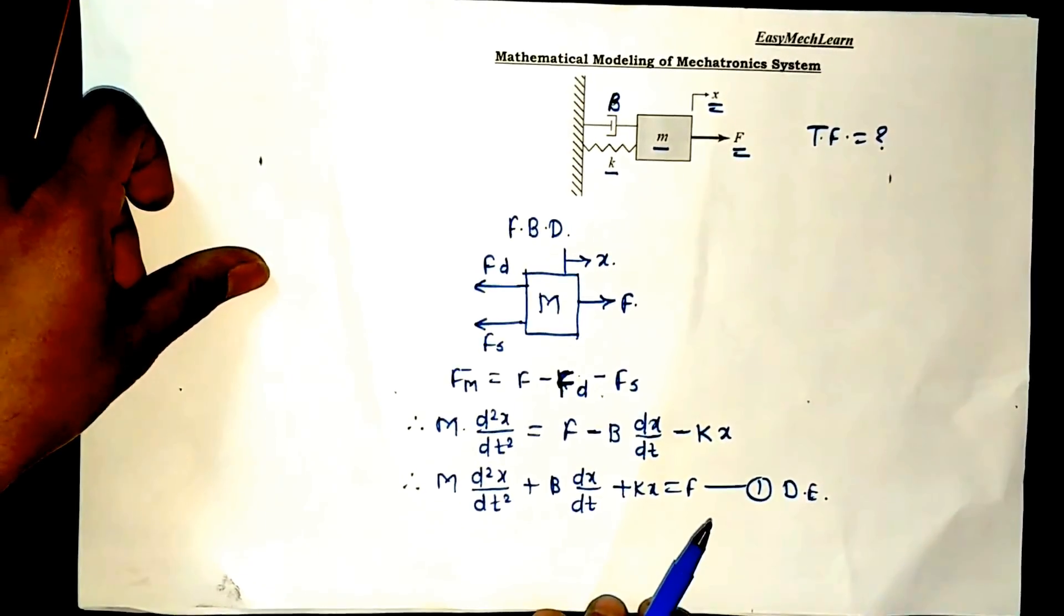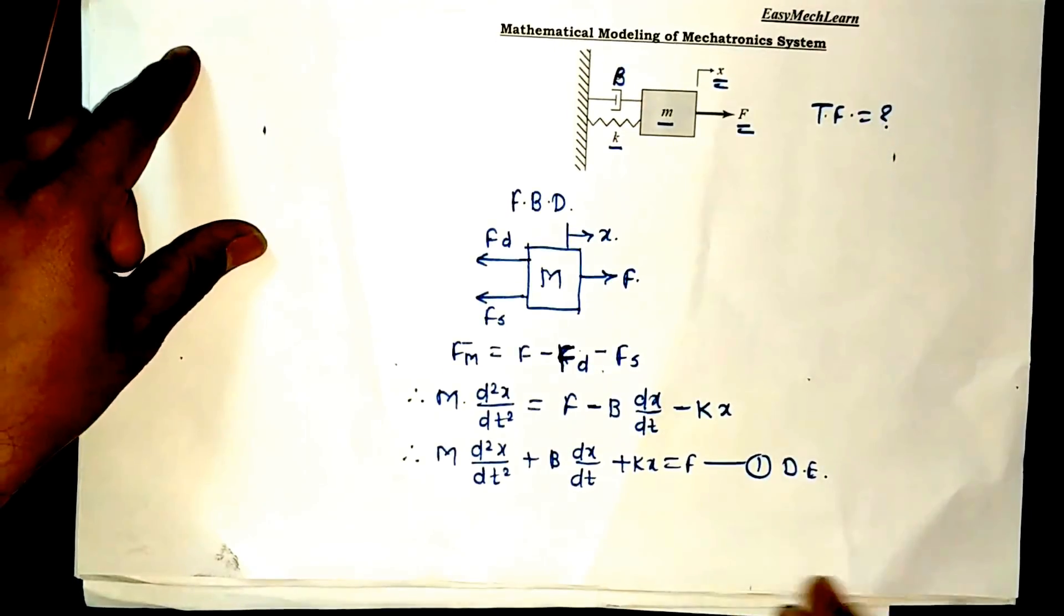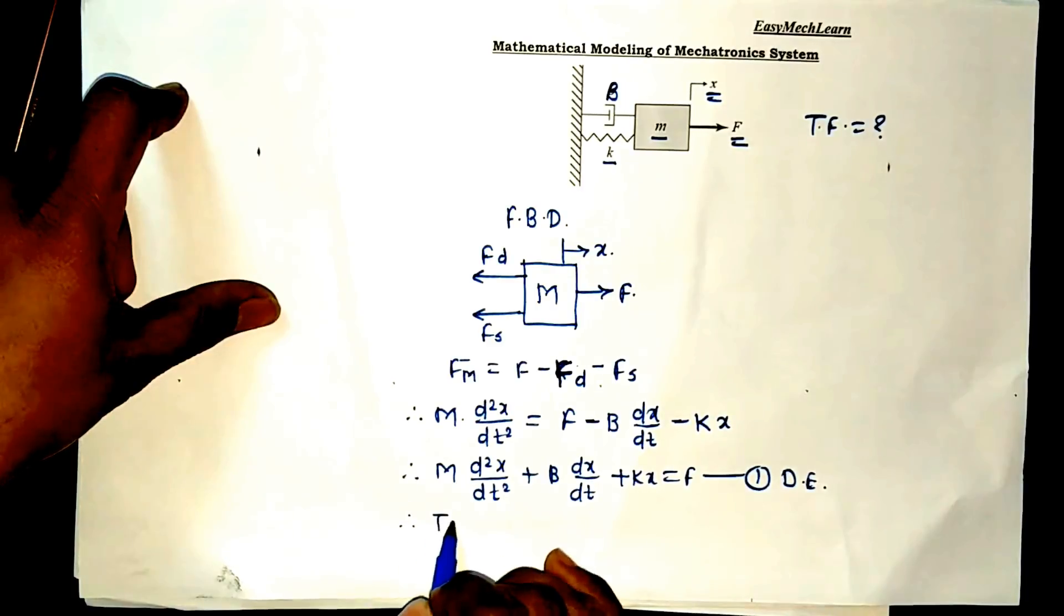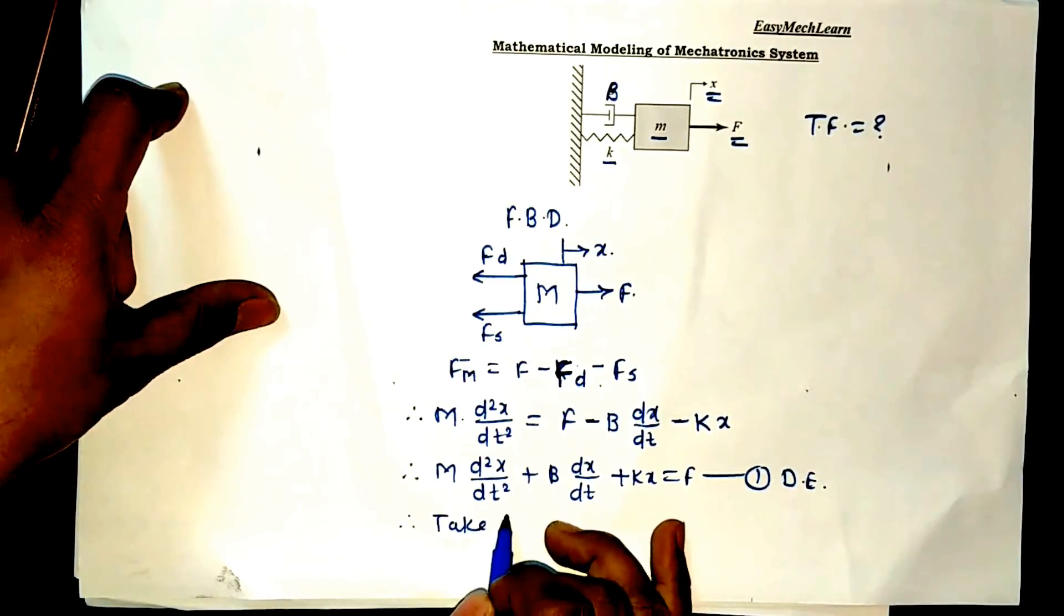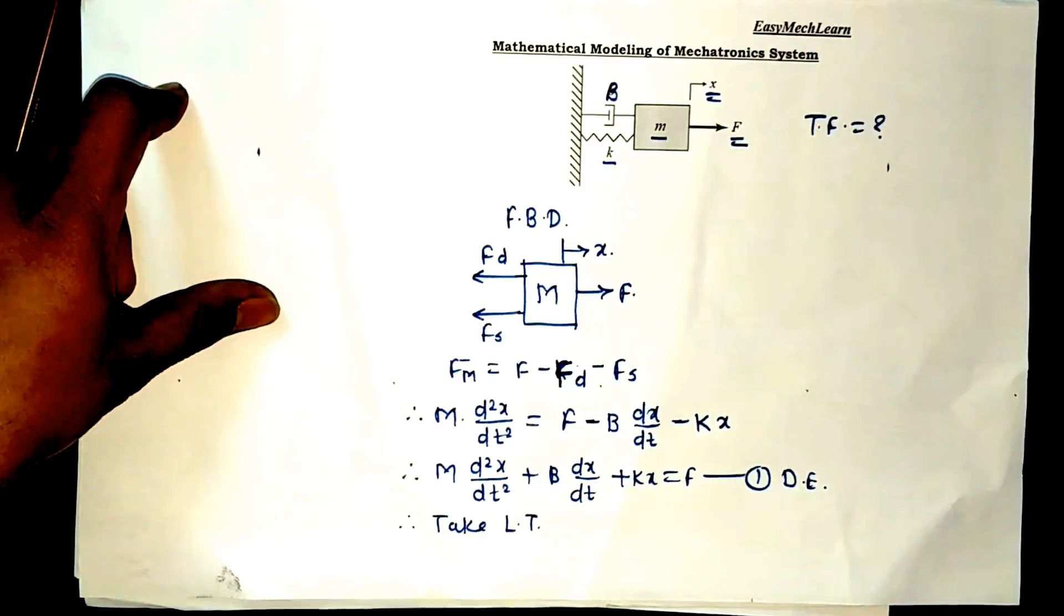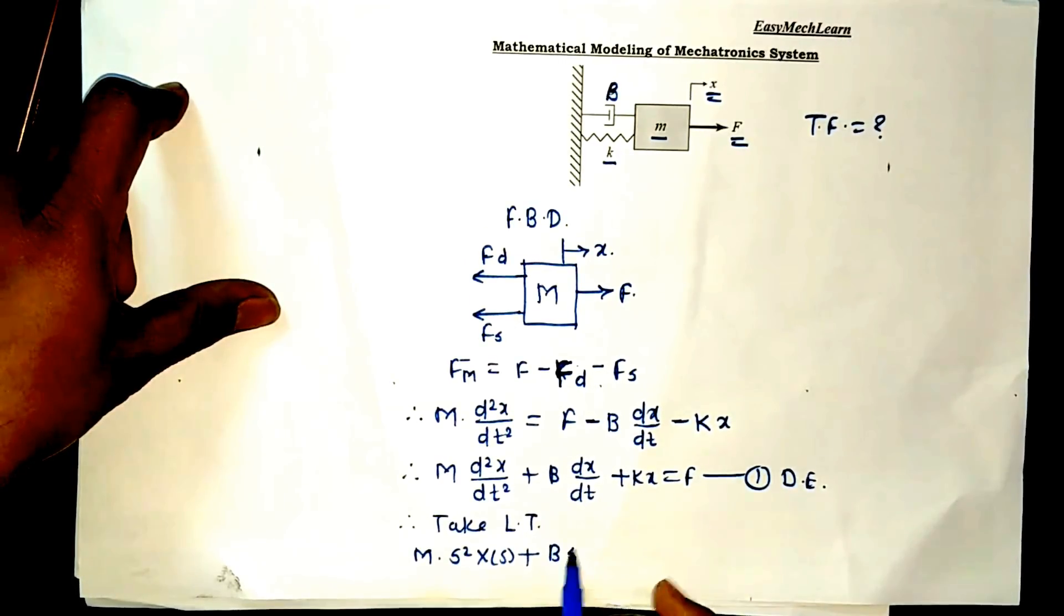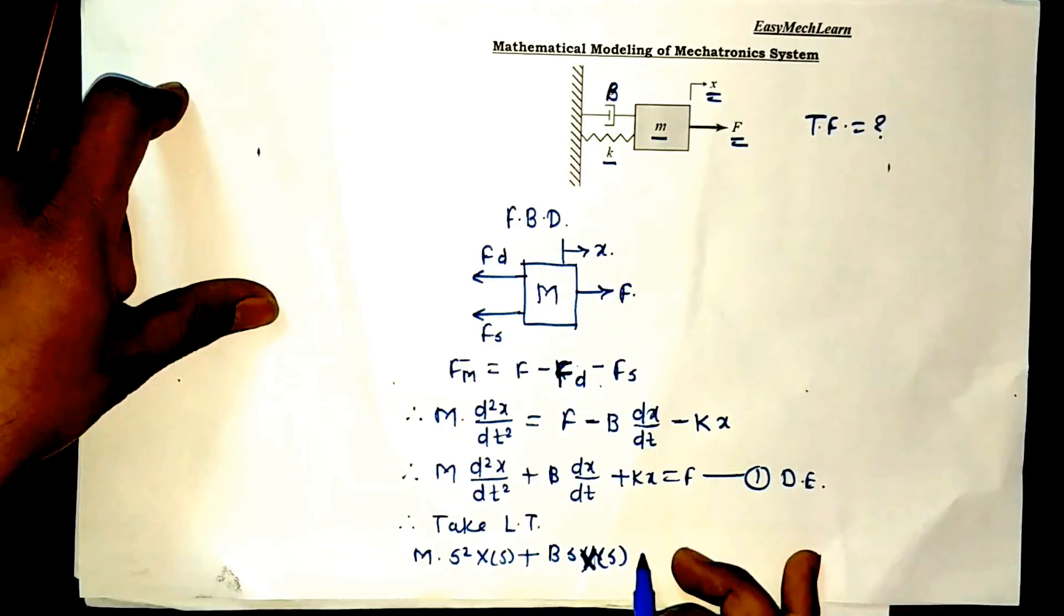Now, next step is take the Laplace transform of equation first. M into s square into X of s plus B into s X of s plus K into X of s is equal to F of s.